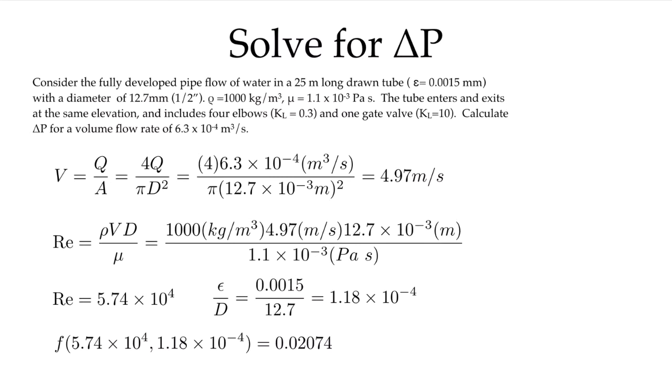Now we need to look up the roughness for a drawn tube. When I look up the roughness for a drawn tube from my sources, you should get the same value if you look it up, or you can use this value in your future work. For a drawn tube it's 0.0015, and that will be given in units of millimeters.